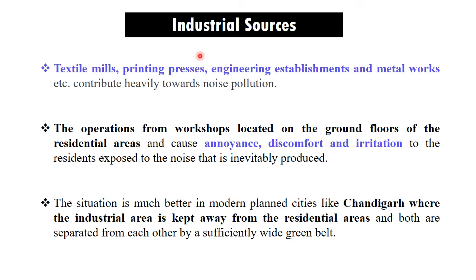Industrial sources are those sources of noise which come from various kinds of industries, like textile mills, printing press, engineering establishments, metalworking, etc. All these industrial units contribute heavily towards noise pollution because they create sound waves with very high frequencies. Operations from workshops located on the ground floor of residential areas cause annoyance, discomfort, and irritation to residents. The situation is much better in modern planned cities where the industrial area is kept away from the residential area, separated by a sufficiently wide green belt.